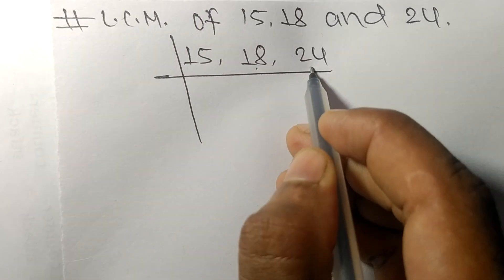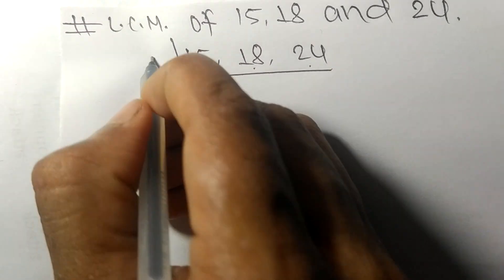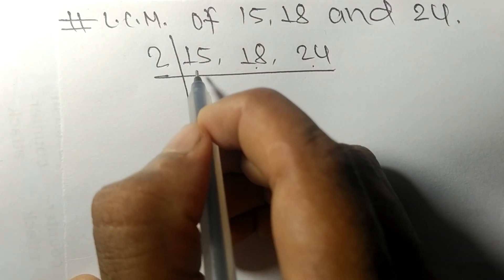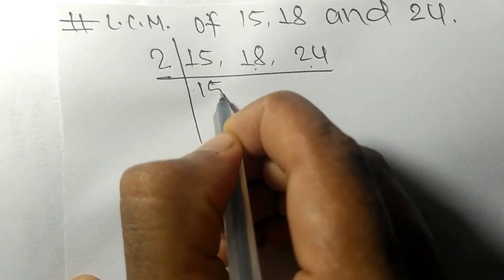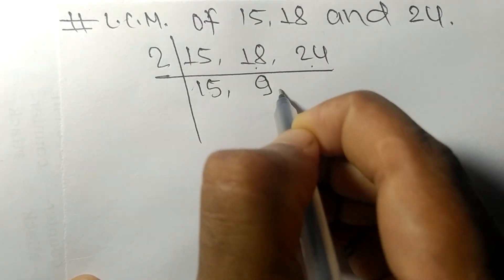18 and 24 are exactly divisible by 2. 15 is not divisible, so it is same. 2 times 9 means 18, 2 times 12 means 24.